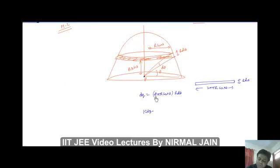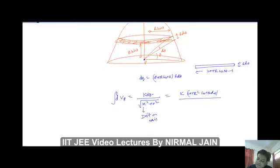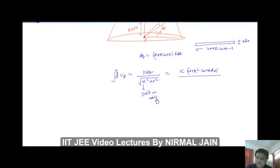The potential at this point P we know from previous lectures is simply equal to K dq upon square root of x squared plus radius of ring squared. This is the distance on axis, distance between the center of the ring and the point P.